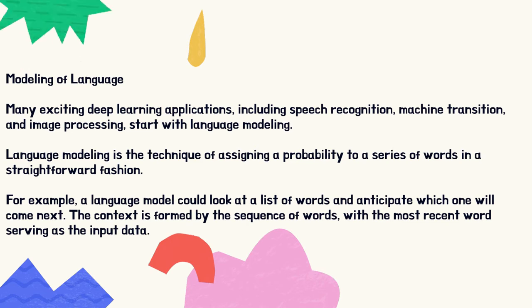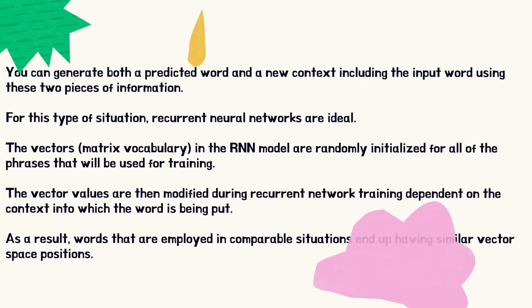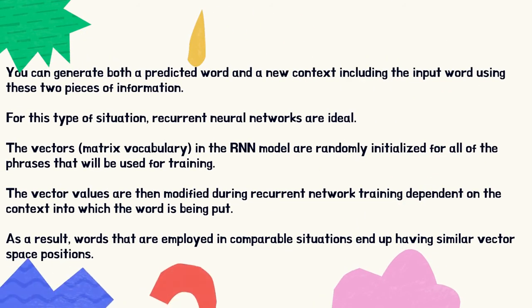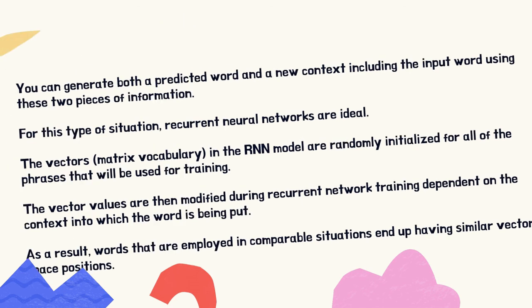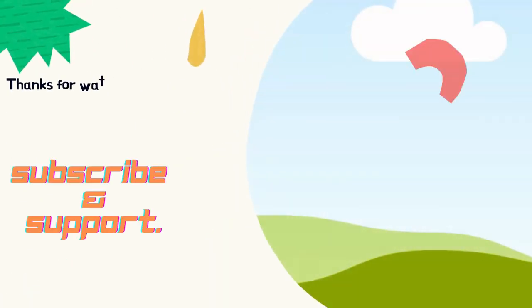You can generate both a predicted word and a new context including the input word using these two pieces of information. For this type of situation, recurrent neural networks are ideal. The vectors and matrix vocabulary in the RNN model are randomly initialized for all of the phrases that will be used for training. The vector values are then modified during recurrent network training dependent on the context into which the word is being put. As a result, words that are employed in comparable situations end up having similar vector space positions.